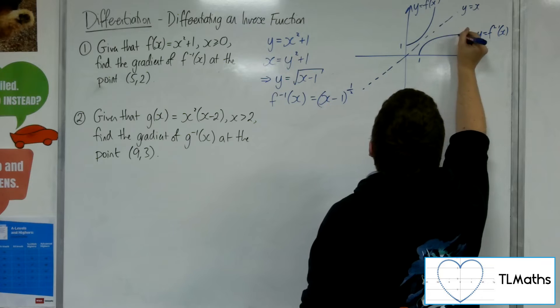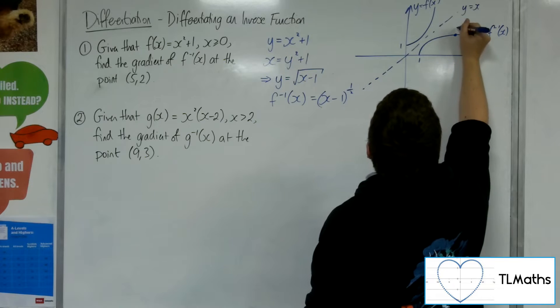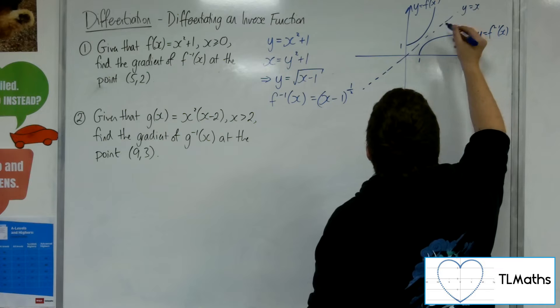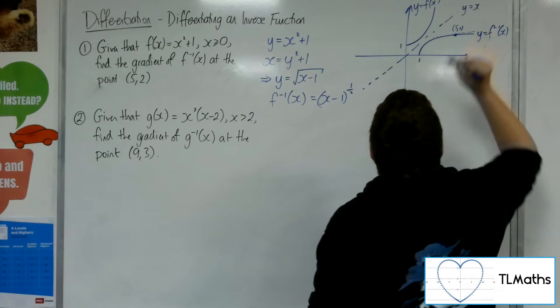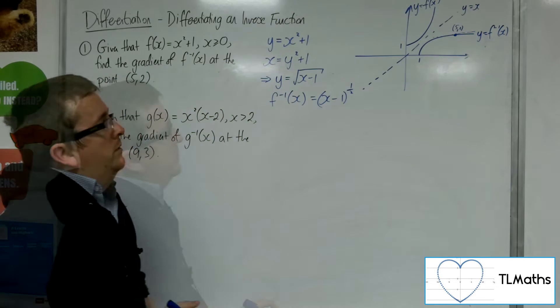So 5, 2 is going to be somewhere over here, right? So it's going to have some kind of positive gradient.